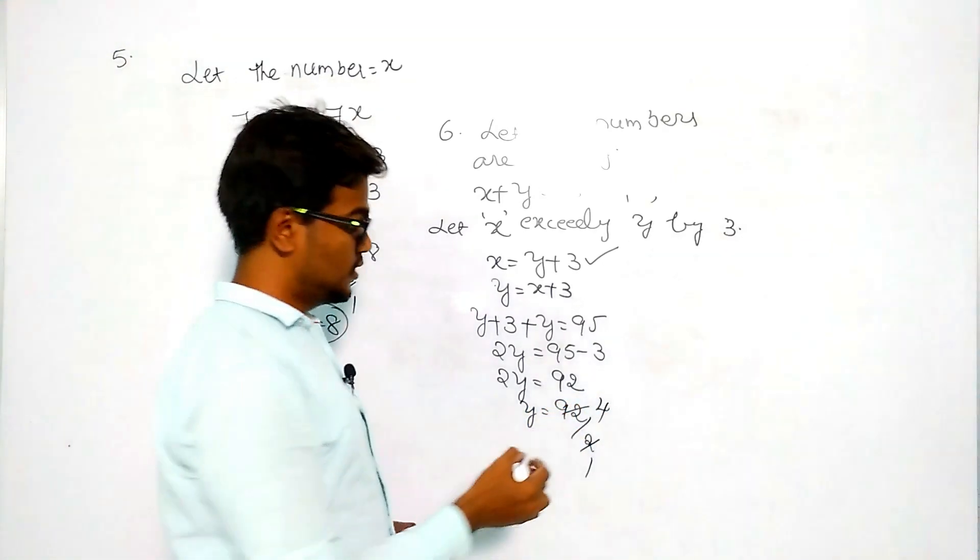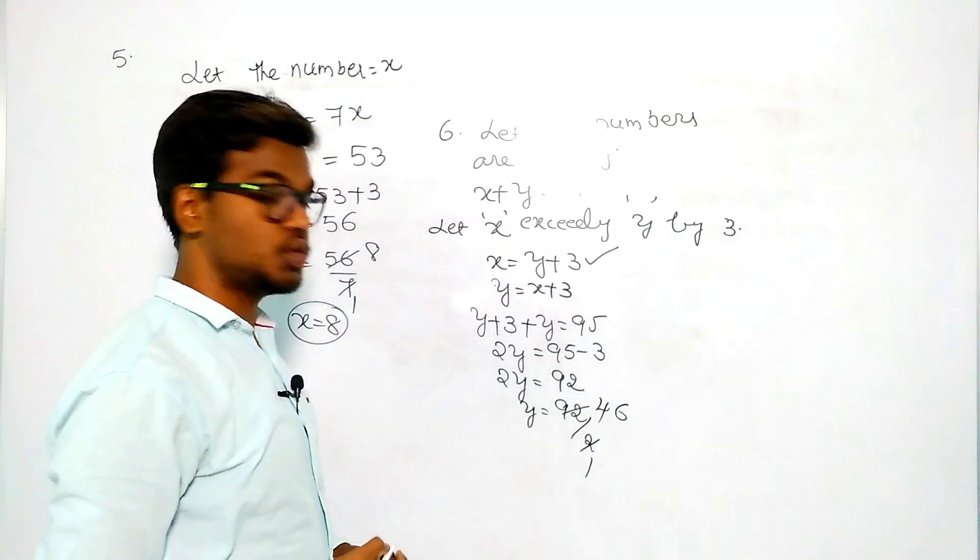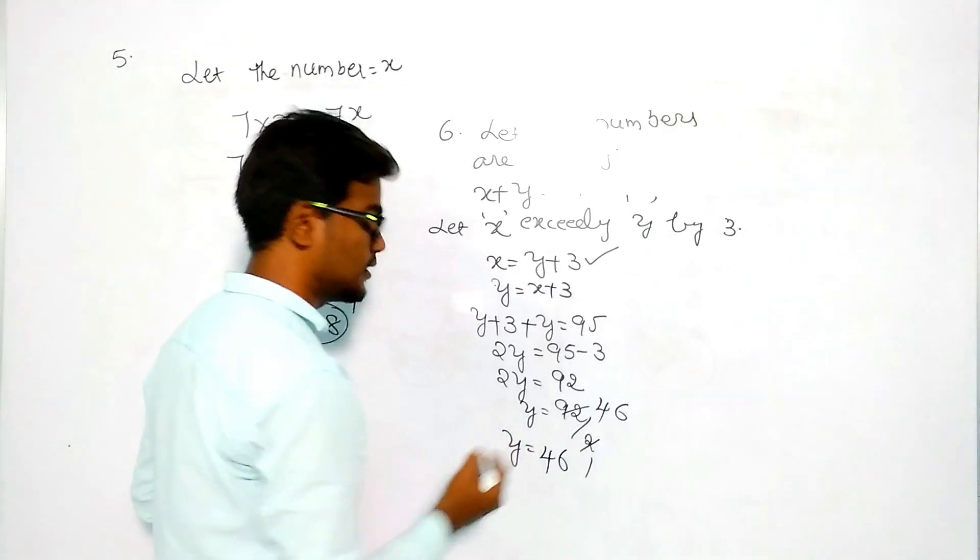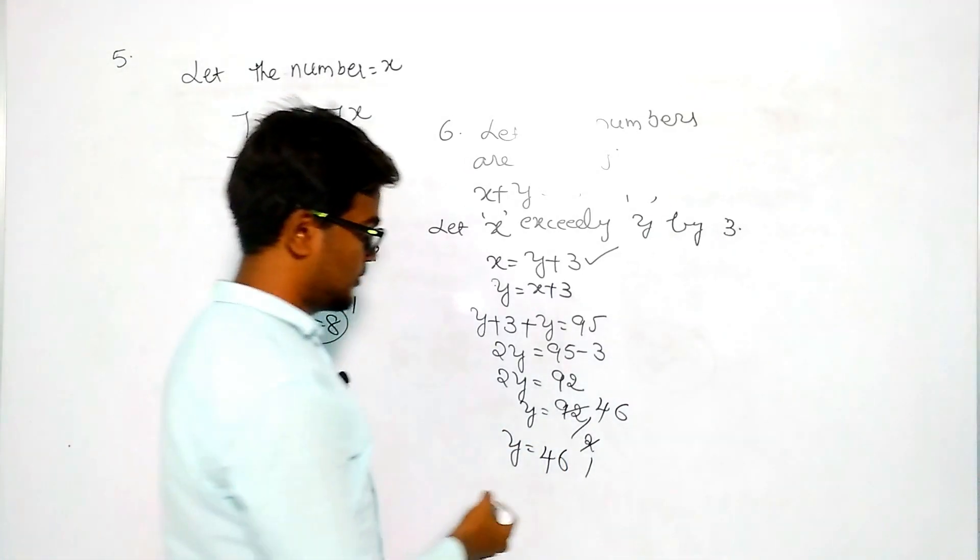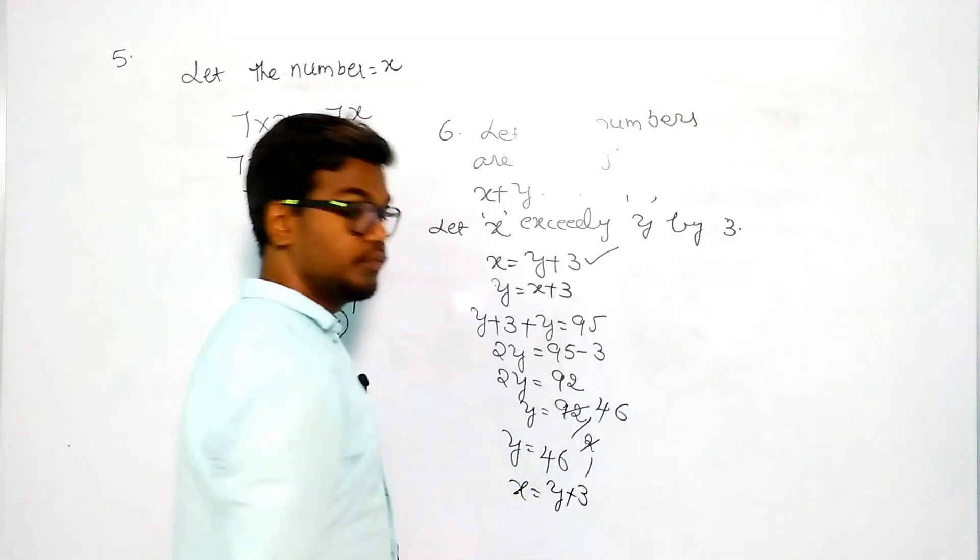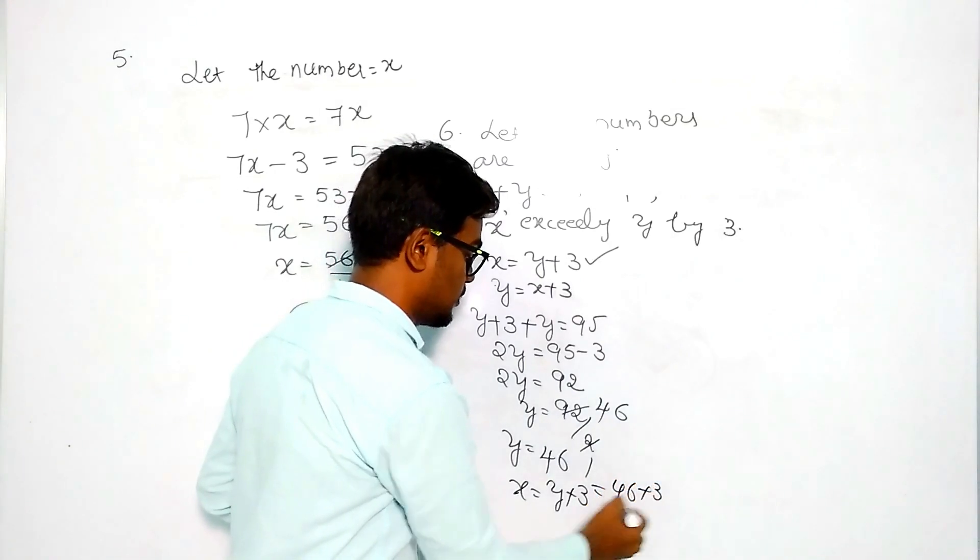Then y equals 92 by 2, which is 46. Then what is the value of x? x equals y plus 3, so y is 46 plus 3, which will be 49.